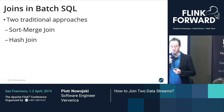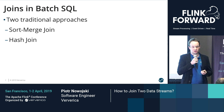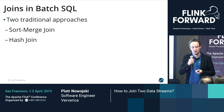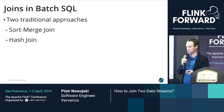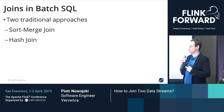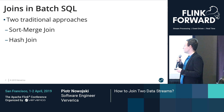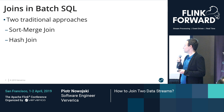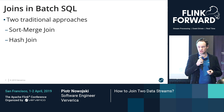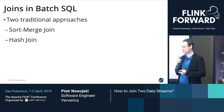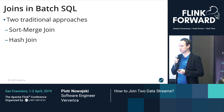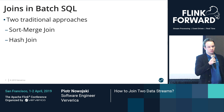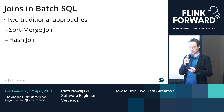Hash join works a little bit differently. Here we first select one of the tables and create a hash map out of it, so we have to read this table fully. In our hash map, the key will be the columns used in the join condition, while the value is the row itself. After creating this hash map and fully reading one table, we can start reading the second table record by record, and for every record we perform a hash lookup into our hash map.